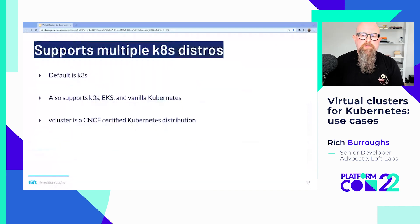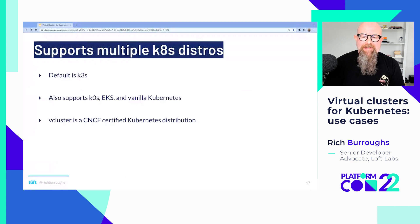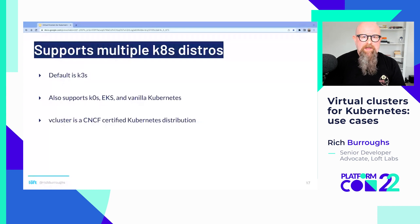vCluster supports multiple Kubernetes distributions. The default is K3s, but it also supports K0s, EKS (thanks to a pull request from Justin Garrison on the AWS team), and what we call vanilla Kubernetes — the standard Kubernetes API server. vCluster itself is also a certified Kubernetes distribution by the CNCF, meaning it passes a suite of conformance tests, which gives us more confidence in using it.